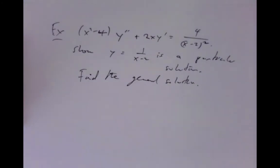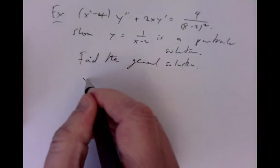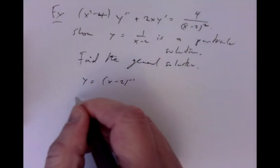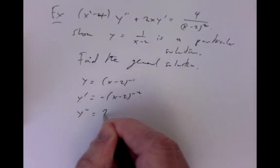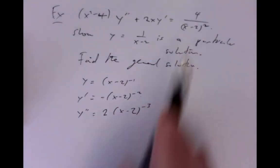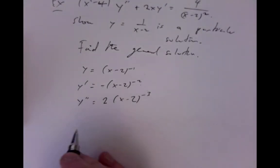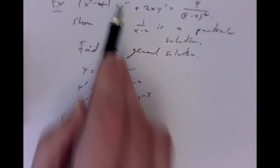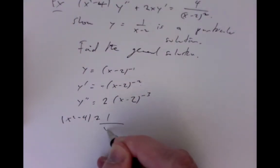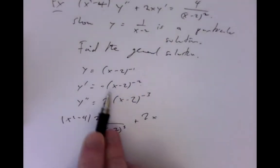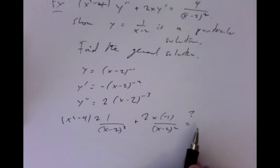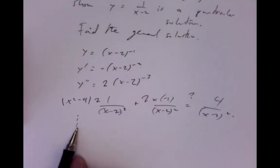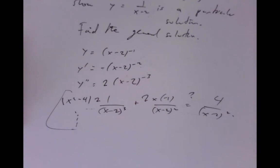So let's see how we do that. We plug in: writing y as (x minus 2) to the minus 1, so y prime is minus (x minus 2) to the minus 2, and y double prime is 2(x minus 2) to the minus 3. We take those functions and plug them in: (x squared minus 4) times 2 over (x minus 2) cubed, plus 2x times minus 1 over (x minus 2) squared, and ask whether it equals 4 over (x minus 2) squared. I'll leave you to check that the algebra works, and let's go on to the next part of the problem.